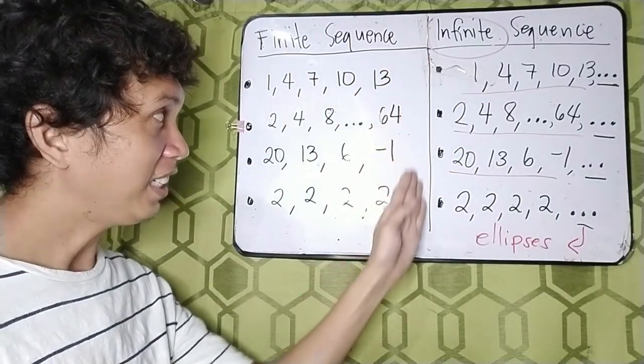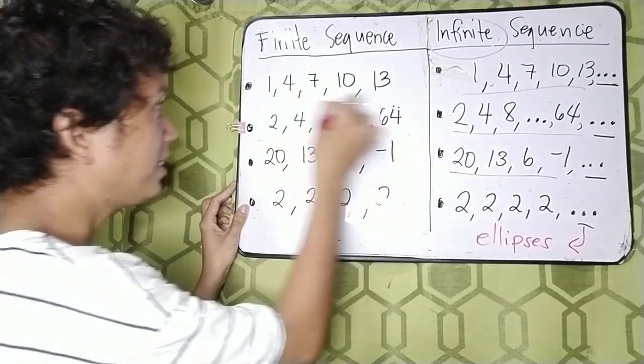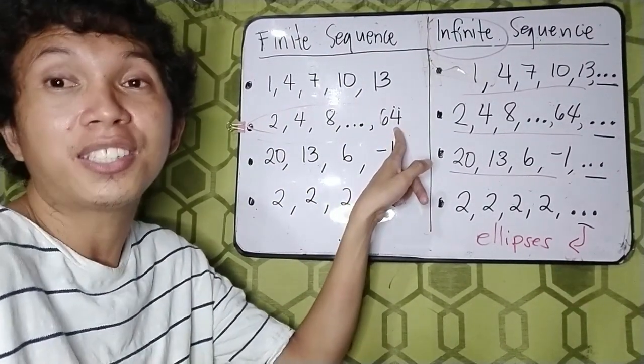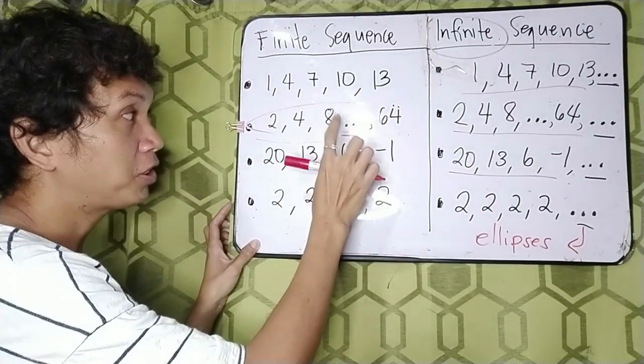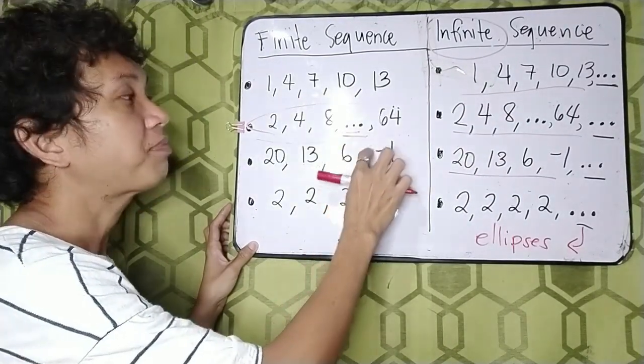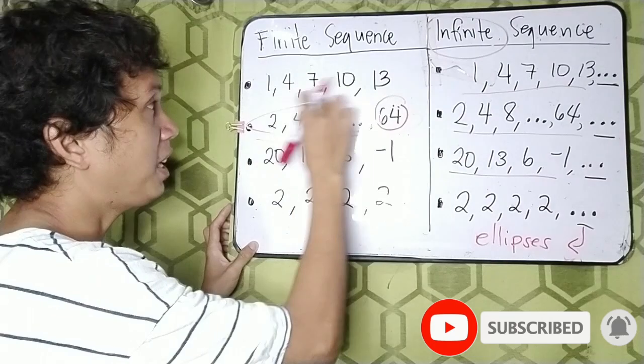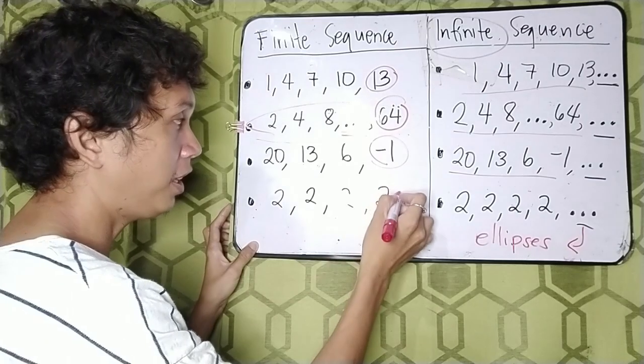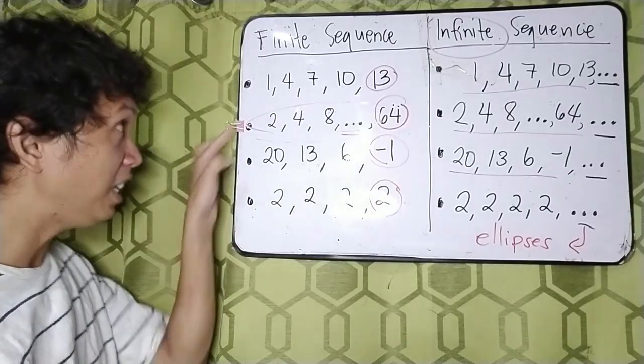Is there an ellipsis here? As you can see, there's none. But there is this one example having an ellipsis. But after that, there is a term, which is 64. So it means that there are terms which are being skipped. And then the last term is 64. And the last term here is 13. The last term here is negative 1. And the last term here is 2.